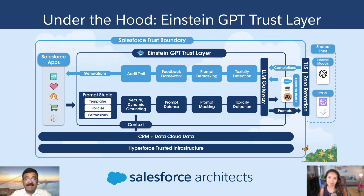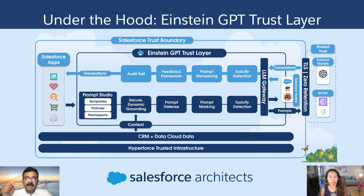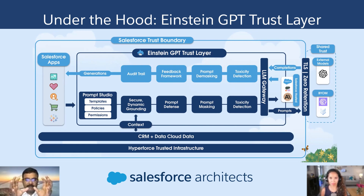You said it right. As part of the post-processing, once we get back the generated response, we will do the reverse operation — the reverse masking of replacing those alphanumeric tokens with the actual values which we had replaced earlier. That way, the response within the trust boundary has all the context and all the different PII information required for our customers.